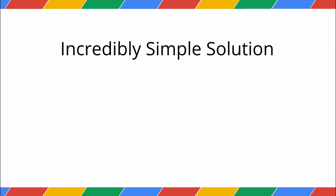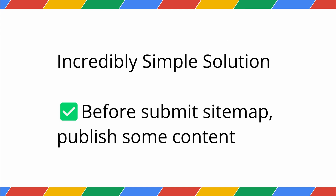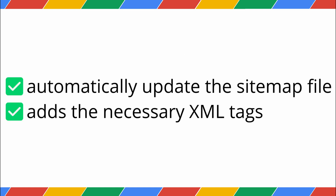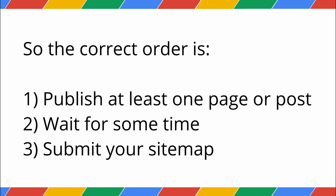This brings us to the incredibly simple solution. Before you submit your sitemap to Google Search Console, you need to publish something first. Once you publish something, your website's CMS will automatically update the sitemap file and add the URL of that new content. This adds the necessary XML tags that Googlebot was looking for. So the correct order is: publish at least one page or post on your new site, wait for some time for your sitemap to automatically update, then go to Google Search Console and submit your sitemap URL.